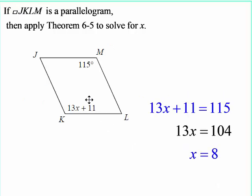Next one. We're going to apply theorem 6-5, which means that the opposite angles are congruent to each other. So you set up an equality that 13x plus 11 is equal to 115. Subtract the 11 from each side, divide by 13 on each side, and you wind up with x is 8.